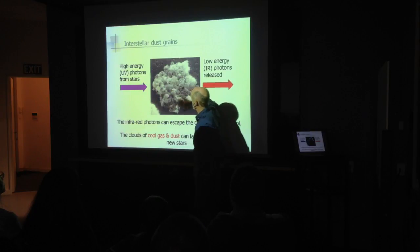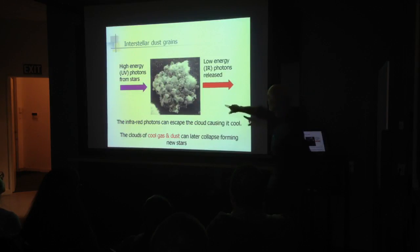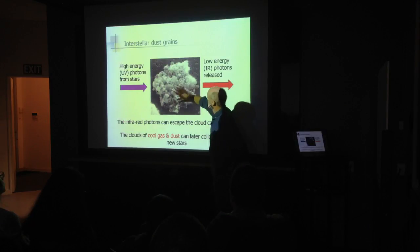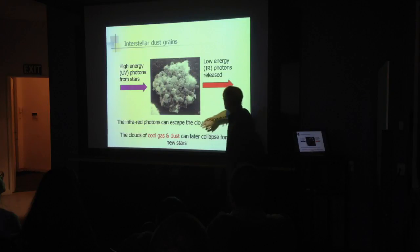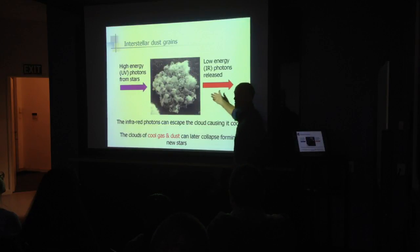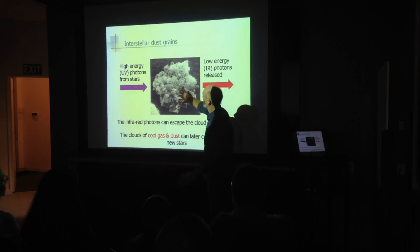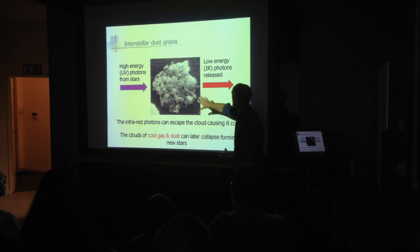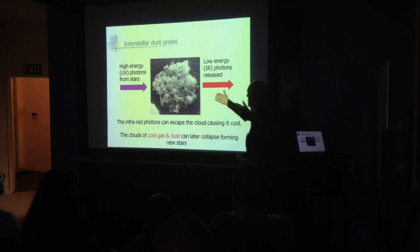The grain keeps absorbing these hits over time until it gradually warms up, and all that distributed energy releases an infrared photon. Infrared photons have much longer wavelengths, so they can travel right through dust clouds without stopping. Essentially, the ultraviolet energy of nearby stars is being processed by dust and released entirely from the cloud by infrared photons, dropping the temperature of the cloud. It's a way the cloud loses energy — and if it wasn't for dust, that wouldn't happen.